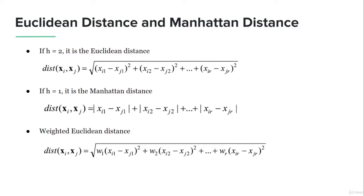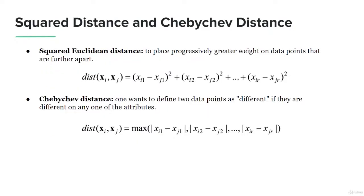Another type is the squared Euclidean distance, which removes the square root from the equation, adding progressively greater weights to data points that are further apart. The Chebyshev distance uses the maximum value among the attributes — it identifies the attribute with the maximum difference as the most differentiating one, giving you the ability to distinguish data points using a single attribute's maximum difference.